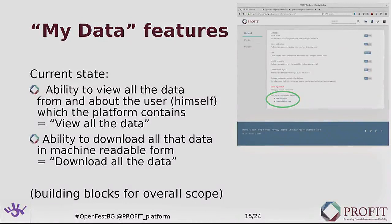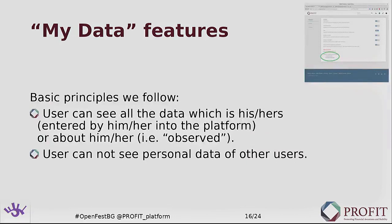My Data features: we currently have a prototype platform — I will give you the URL at the end of the presentation. The basic features: you register, and that's the first step where you give us some data — a username, password, maybe your name or a photo. The two current features give you the ability to see what we have on you. You can just click the link and see everything we have about you, and we will also give you the ability to download all the data in a machine-readable form so you can work with it.